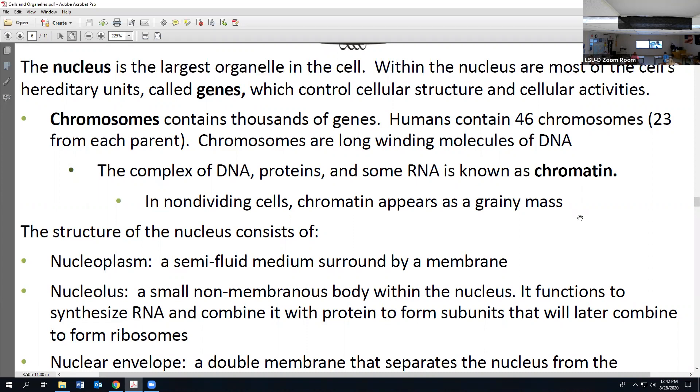Let's talk about our next, possibly the most important of all the organelles. They're all important but this one is kind of the boss - our nucleus. What we can describe as the largest organelle in the cell, where we contain our hereditary units, what we call genes. Notice genes with a G, not with a J, so not what you wear. Genes are the things that code for our individual characteristics, for example like our skin color and our hair color, all unique to each one of us. Genes control cellular structure and cellular activities.